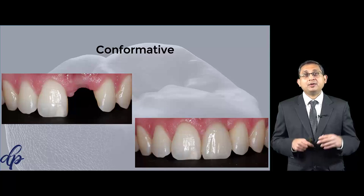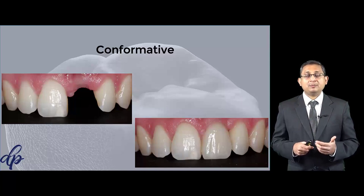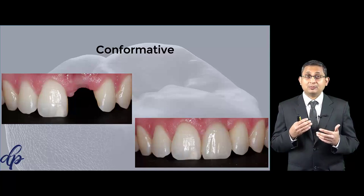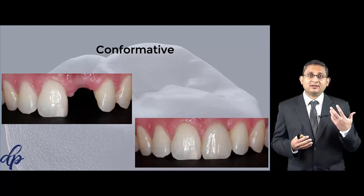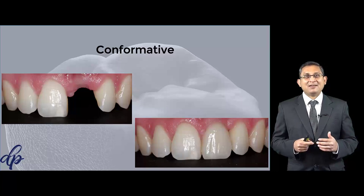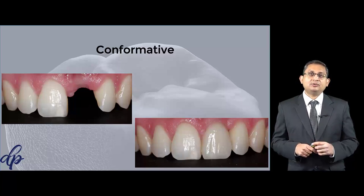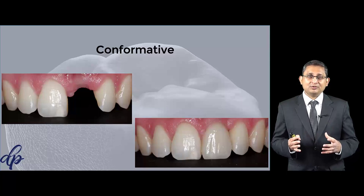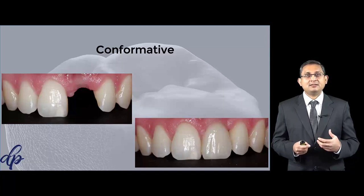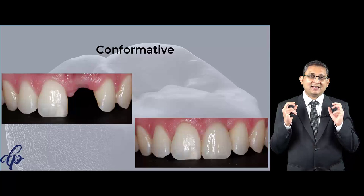However, if you're doing three-to-three crowns, you may change the patient's occlusion because if you want to put guidance on the canines and incisors, inevitably the guidance will change a little. But it's still not a reorganized approach — you will still be able to keep the posterior occlusion as it is.